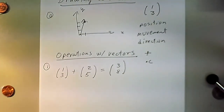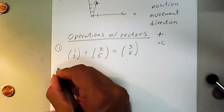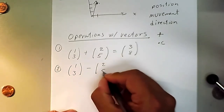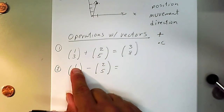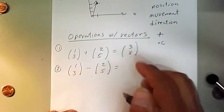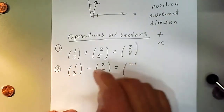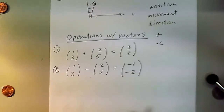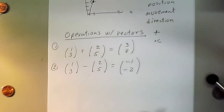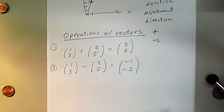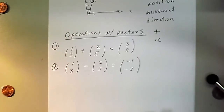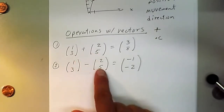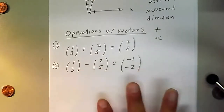Can we subtract vectors? Sure. For example, (1,3) − (2,5): subtract coordinate by coordinate — 1 − 2 = −1, 3 − 5 = −2 — giving us (−1, −2). We can add and subtract vectors, but they must be of the same dimension. We cannot add or subtract vectors of different dimensions — that wouldn't make sense at all.